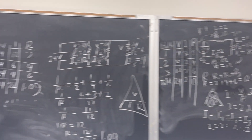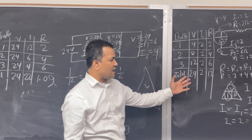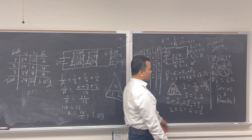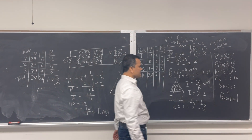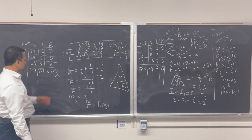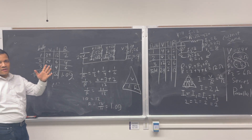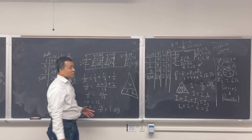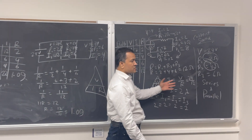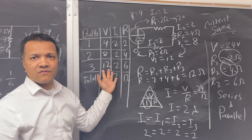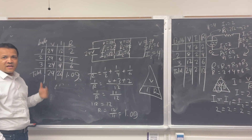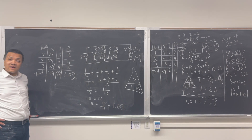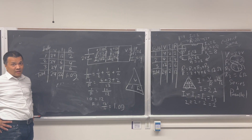Now you can compare the tables from the series circuit and the parallel circuit — both starting from the same 24-volt input. One important takeaway is that the same input does not necessarily give you the same output. You get different outputs for the same input depending on whether the circuit is series or parallel.